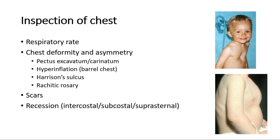We can start with the inspection of the chest. Assess the respiratory rate, counting for one minute, taken while the child is quiet. Look at the shape of the chest — whether there is any chest deformity or asymmetry. Some deformities to look out for include pectus excavatum, where the chest is inwards, or pectus carinatum, where the sternum is facing outwards. Any hyperinflation, known as barrel chest, should also be noted. Also look for Harrison's sulcus and rachitic rosary.